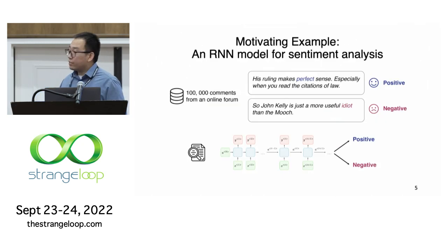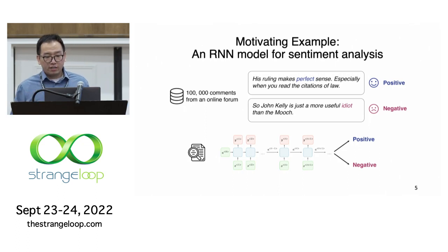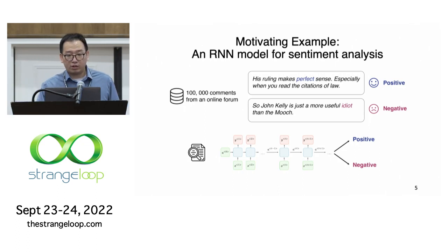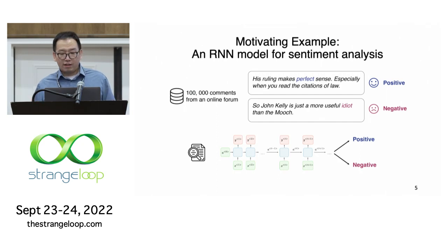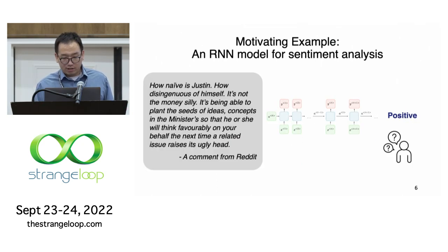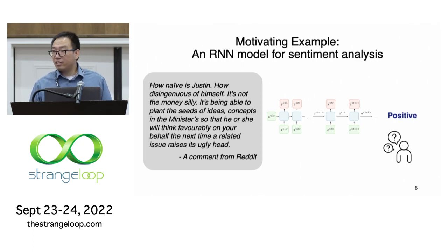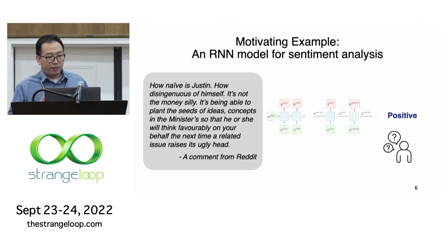Let's look at one example. Suppose you are a programmer and you trained a recurrent neural network to classify Reddit comments as positive or negative opinions. You find the model accuracy is pretty low and you're wondering why. For example, this comment clearly shares a negative opinion, but the model misclassifies it as positive. It's really hard to tell exactly what happens inside the model.